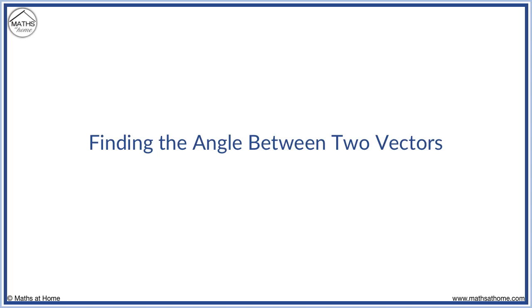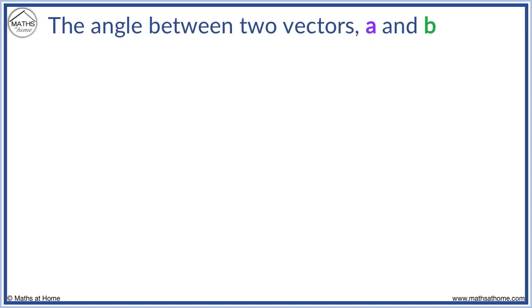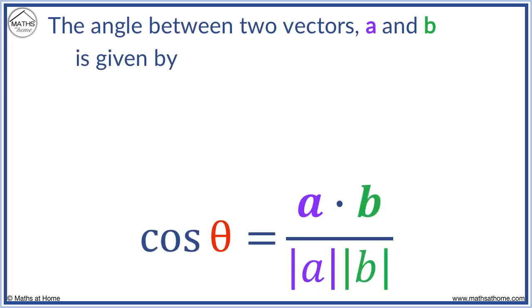In this lesson we learn how to find the angle between two vectors. The angle between two vectors a and b is given by cos theta equals the dot product of a and b, over the magnitude of a and the magnitude of b.